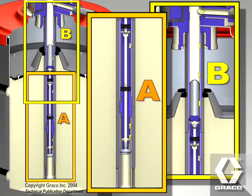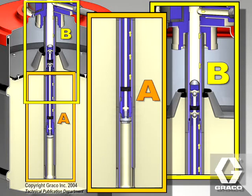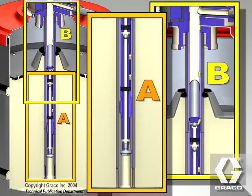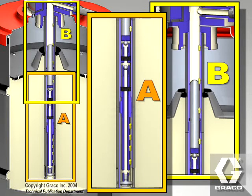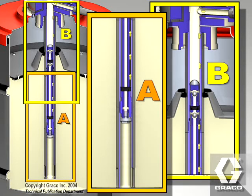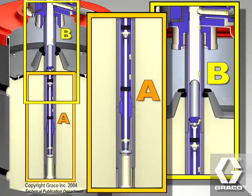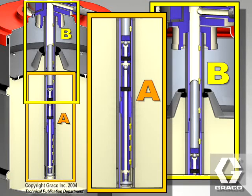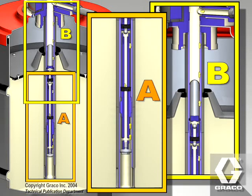On the next upstroke, the upper ball check is closed, allowing the upper half of the grease to be pumped. At the same time, the grease loaded on the priming stroke is forced through the holes near the closed lower check, trapping grease between the foot valve packing retainer and lower ball check.